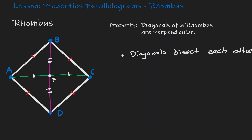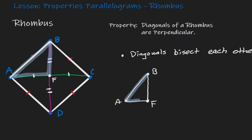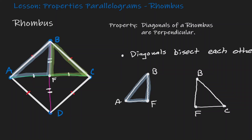Notice that by introducing those diagonals we have also created different triangles. Let's highlight two of them — triangle BAF and triangle BFC — and show them using some colors. Is there anything that we know about these triangles?